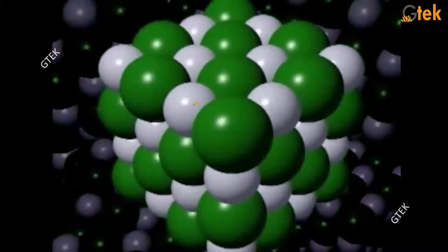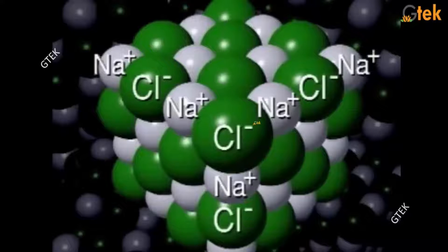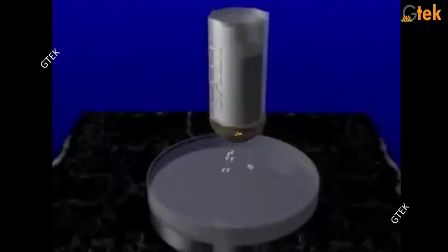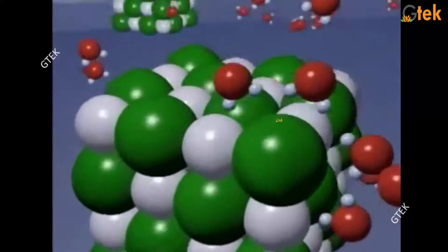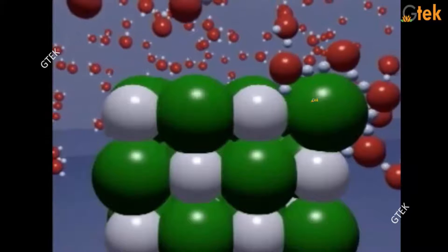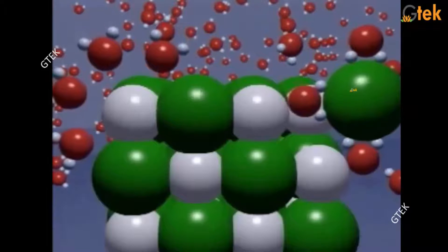Let's discuss the dissociation technique involved in sodium chloride. This is the structure of sodium chloride — this is the crystal. This is the sodium, and this is the chlorine. I am trying to dissolve it in water. You can see the water molecules; it started dissociating the sodium chloride. This is how the dissociation of sodium and chloride is happening in NaCl.